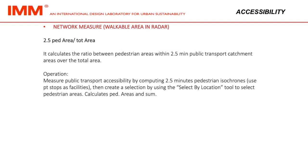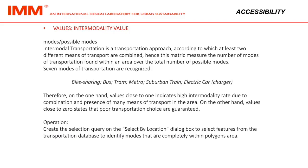Network measure: it calculates the ratio between pedestrian areas within 2.5 minutes public transport catchment areas over the total area. Measure public transport accessibility by computing 2.5 minutes pedestrian isochronomes, use public transportation stops as facilities, then create a selection using the select by location tool to select pedestrian areas. Calculate pedestrian areas and sum. Intermodal transportation is a transportation approach according to which at least two different means of transport are combined. This metric measures the number of modes of transportation found within an area over the total number of possible modes.